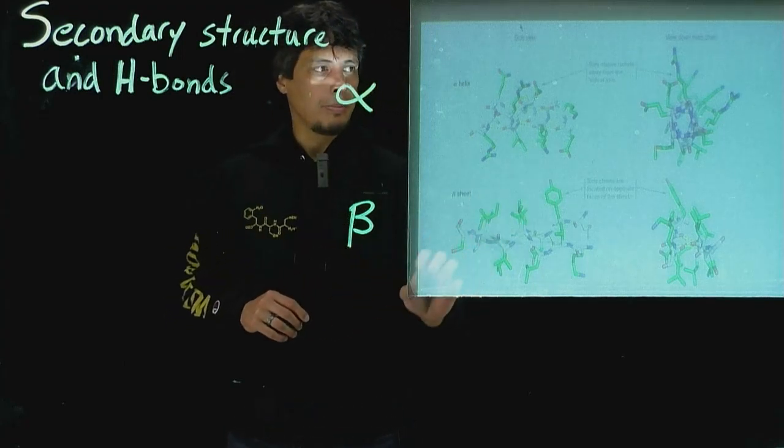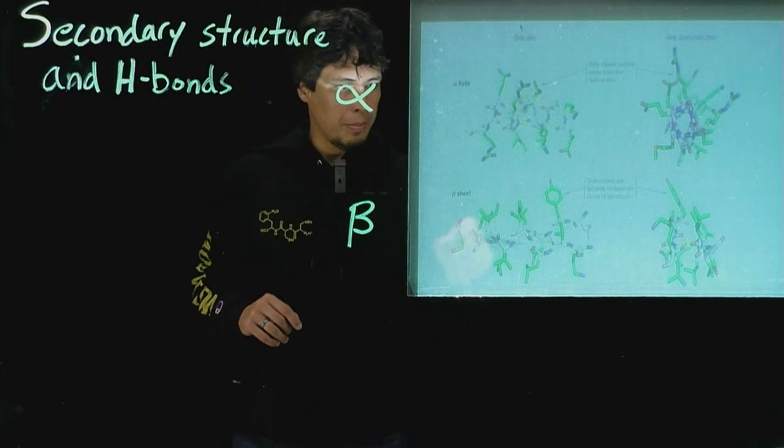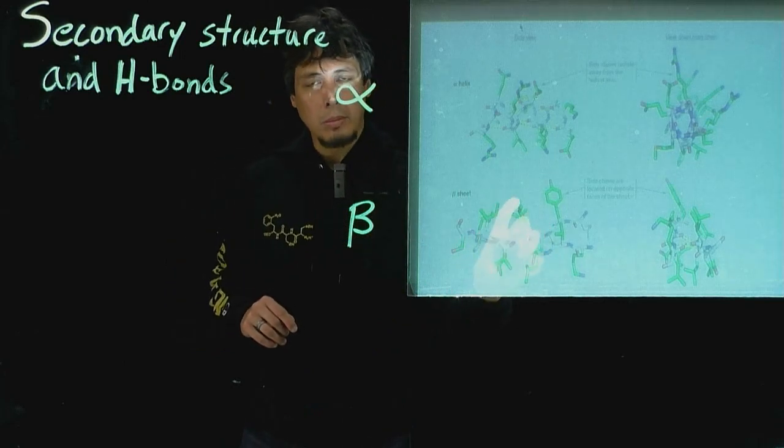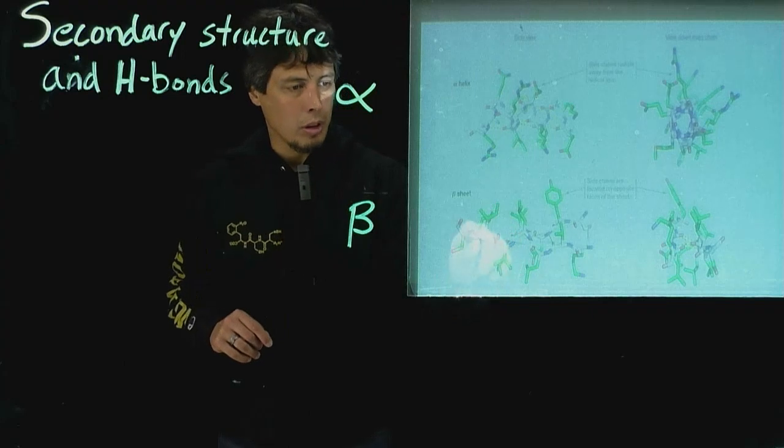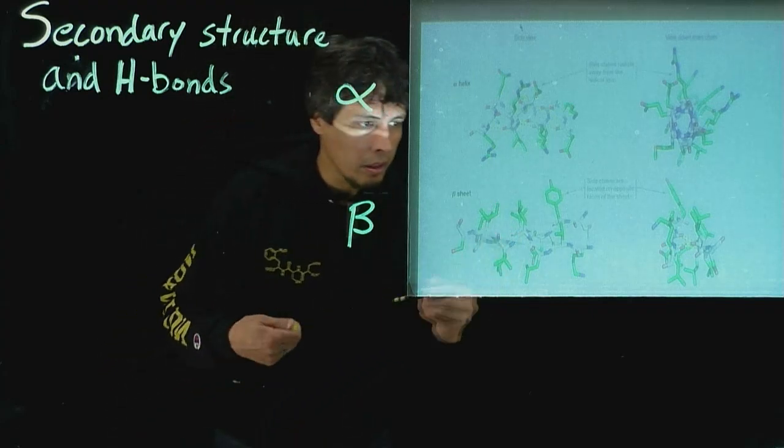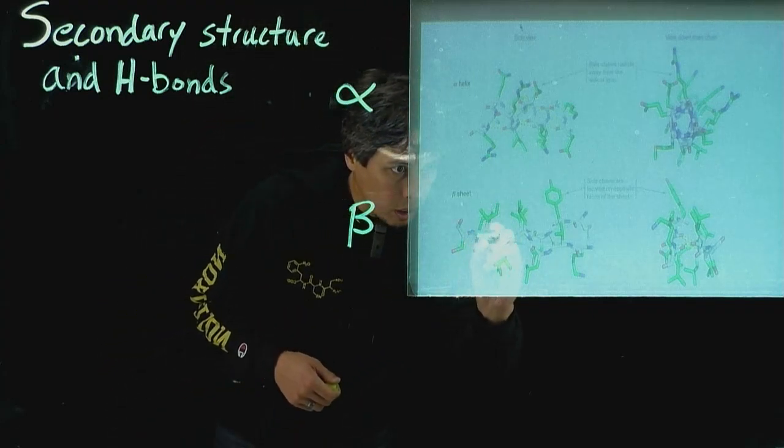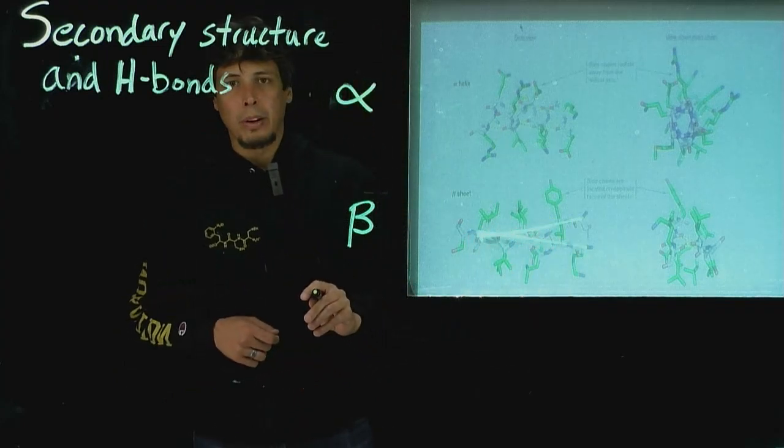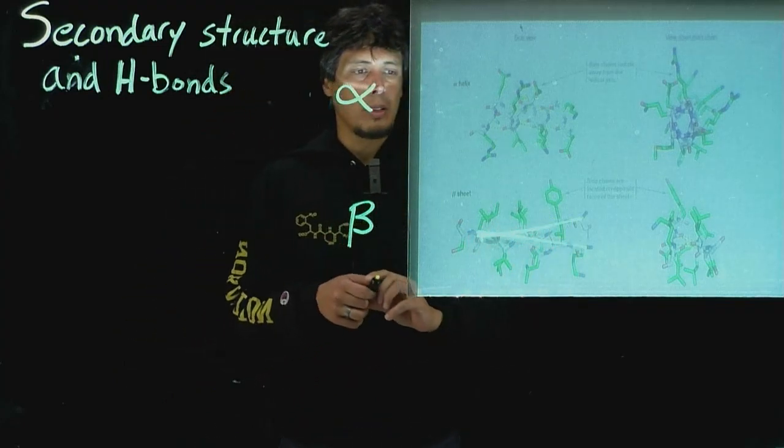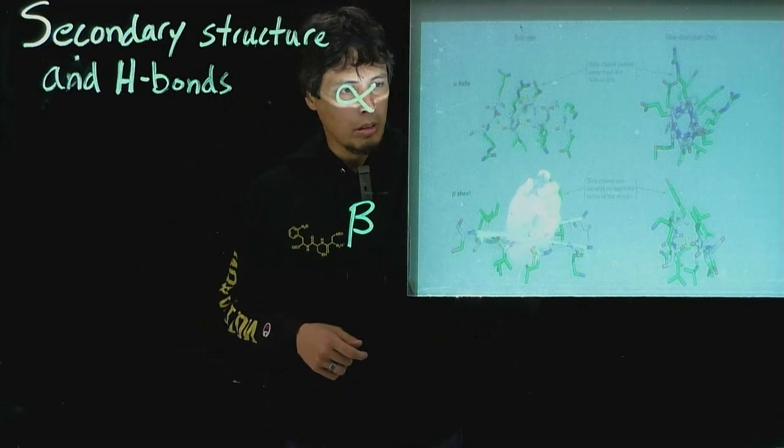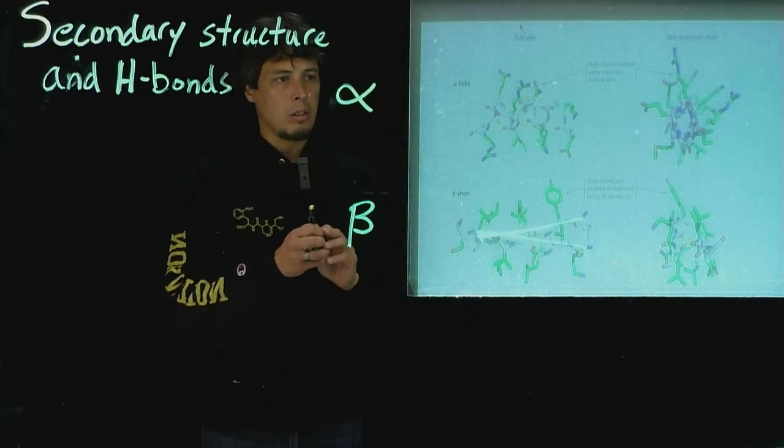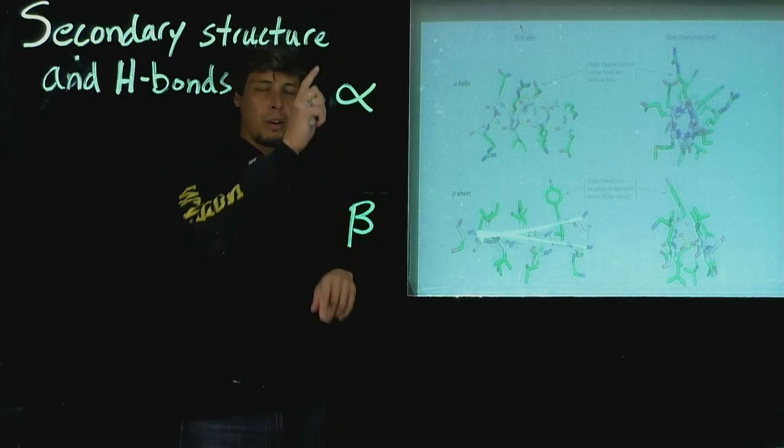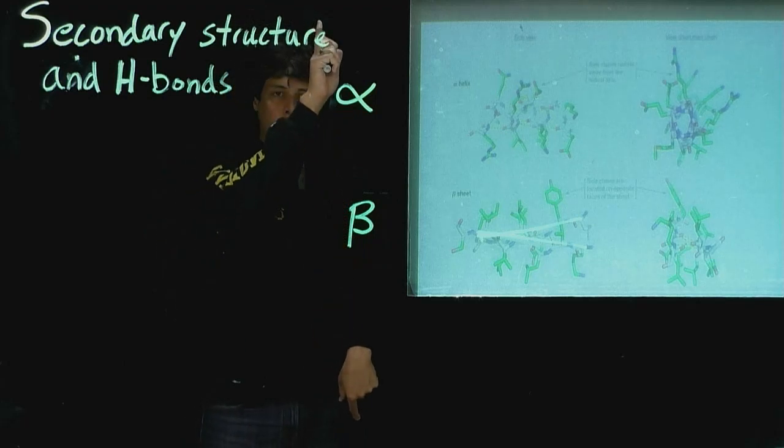The beta sheet also has a similar structure where we can see the planes of the two sheets. So there's one kind of here and then one kind of following this trajectory. And so what you see though is that the side chains stick out from the top and the bottom.